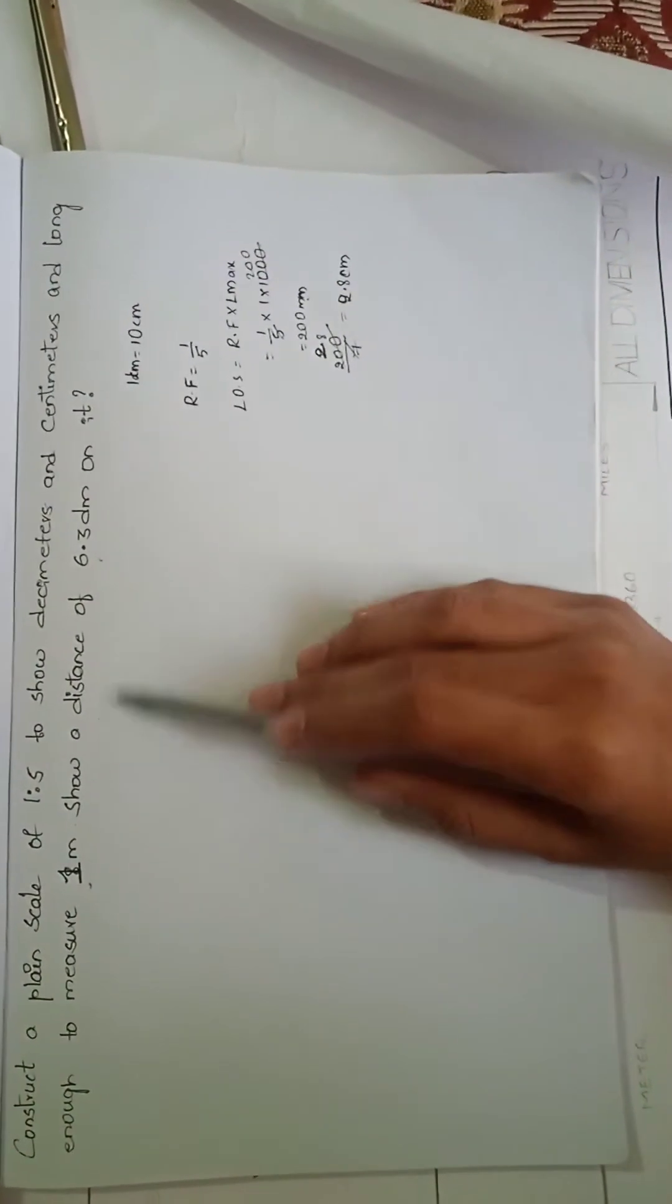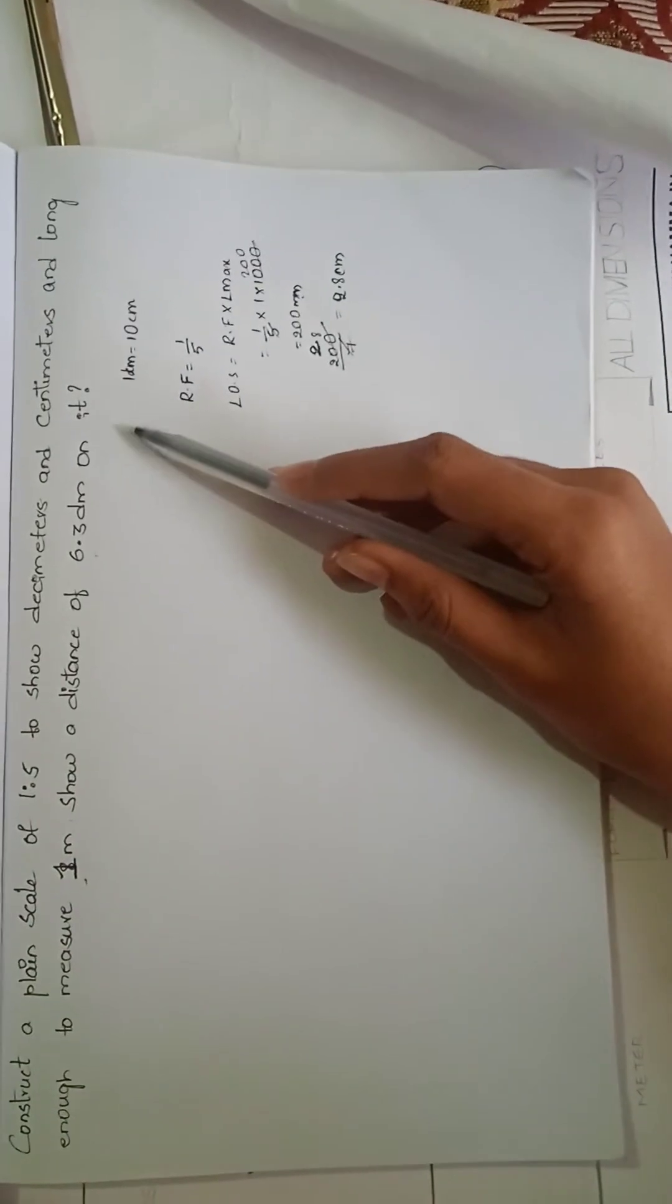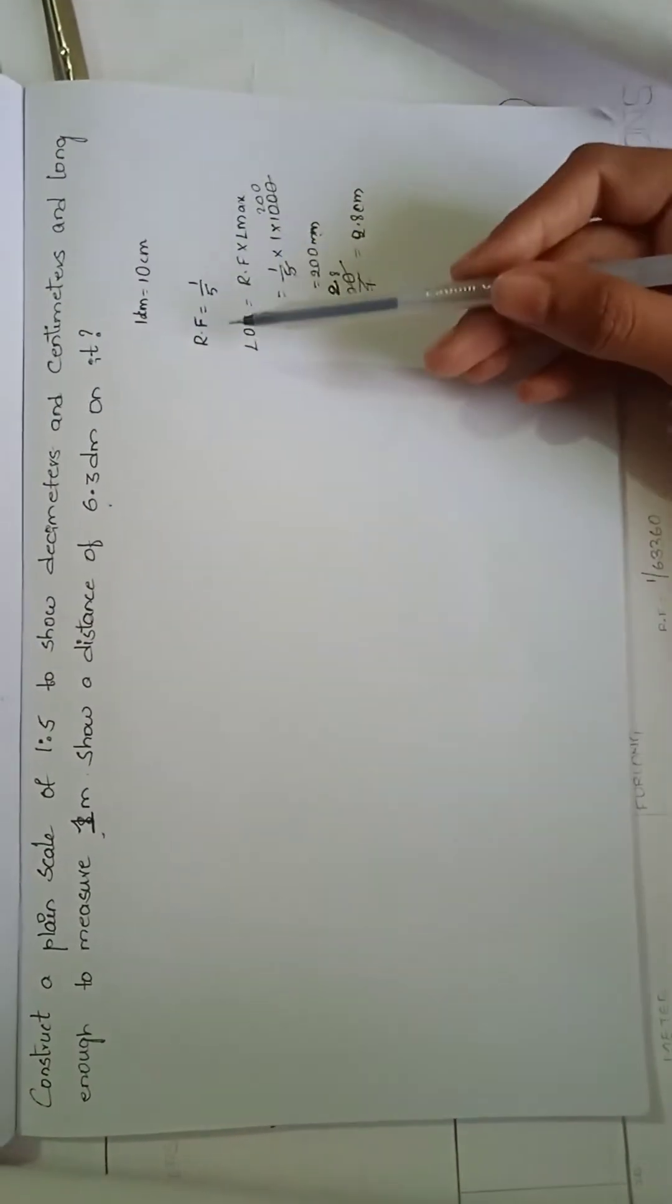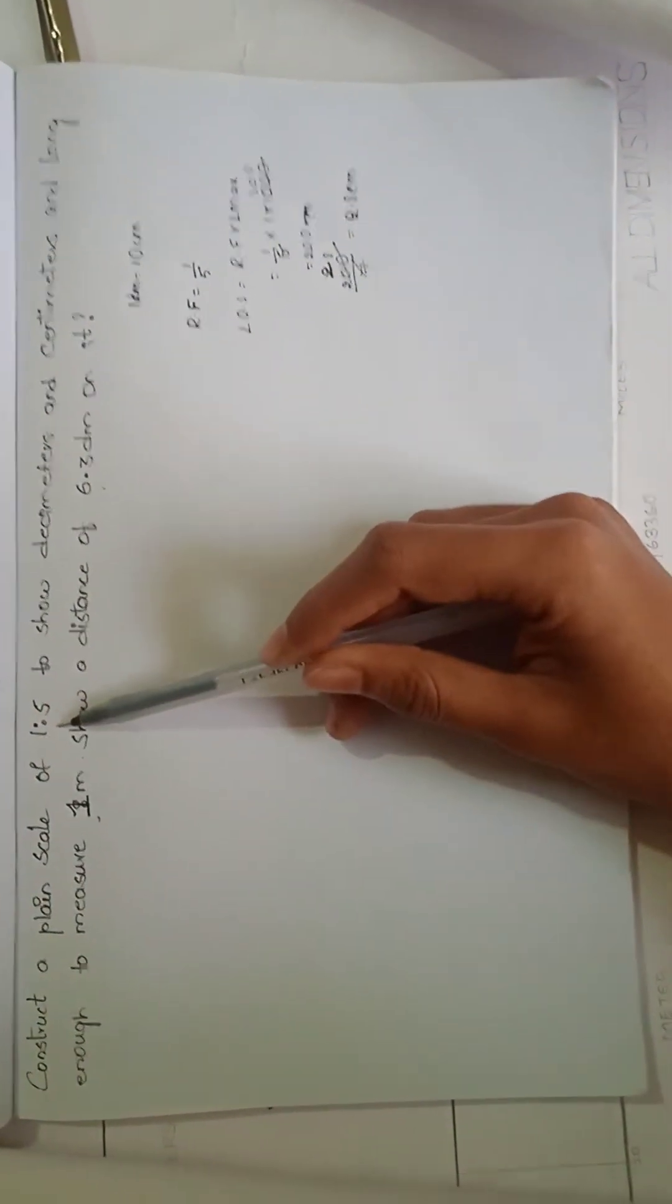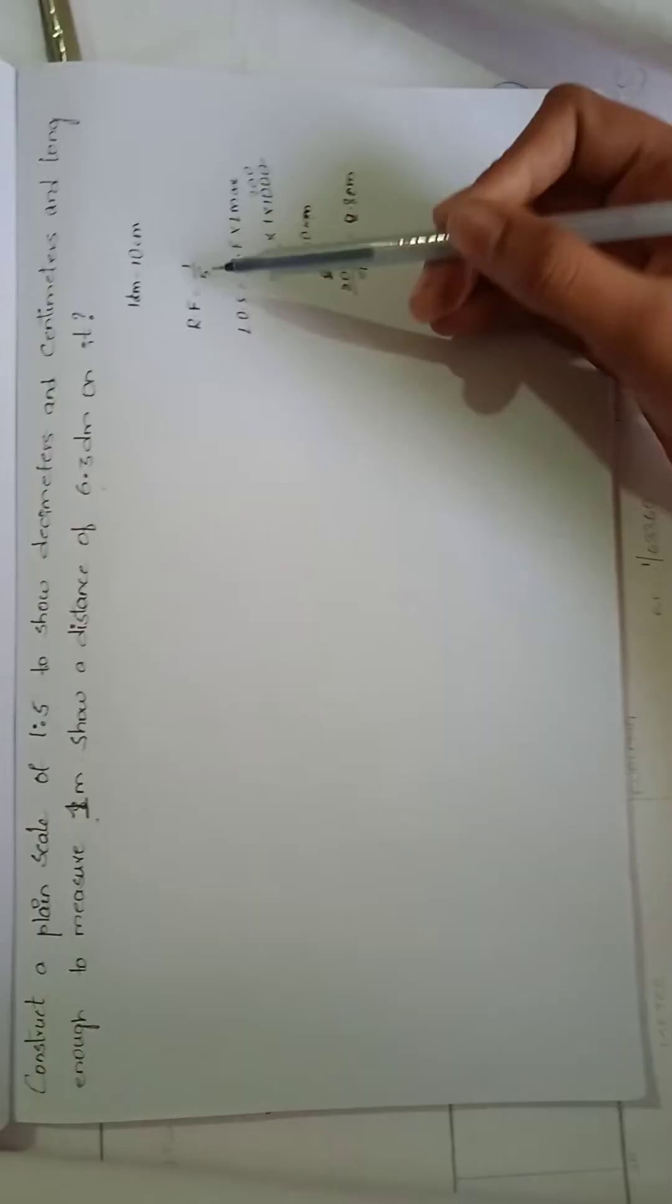Show a distance of 6.3 decimeters on it. We know that 1 decimeter equals 10 centimeters, and to calculate the RF, they have already mentioned in the question that is 1 by 5.